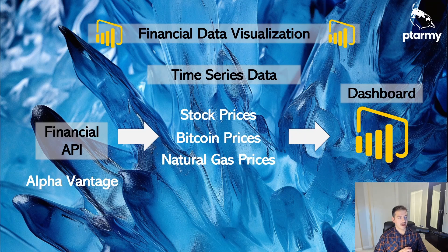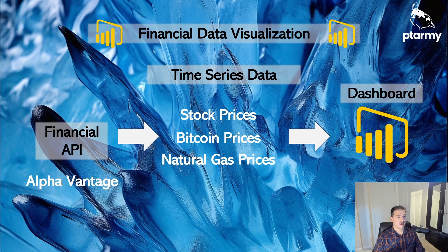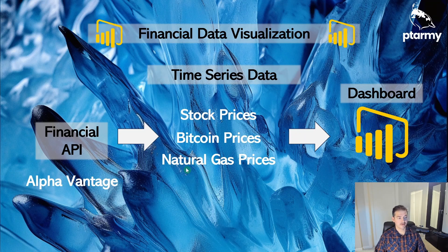We're not doing any export to Excel and then connecting Power BI on top of that. What we're pulling are time series tables, so we'll have a date column and stock prices with the high, low, close, and open — which lets us build the commonly used candlestick chart. Alpha Vantage also offers cryptocurrency pricing, not just publicly traded equities, and daily pricing for commodities like natural gas. Everything will be housed in the Power BI file itself, which keeps it clean and compartmentalized.